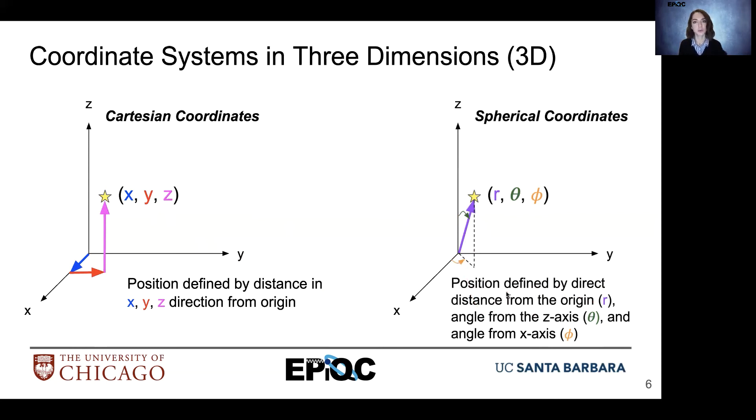Depending on if you're using spherical coordinates for mathematics or for physics, sometimes theta and phi are swapped. So you have to pay attention to that. We'll be using the notation typically used in physics textbooks, where we have our theta angle, our distance from our z-axis, and then our phi angle, the angle from the x-axis.